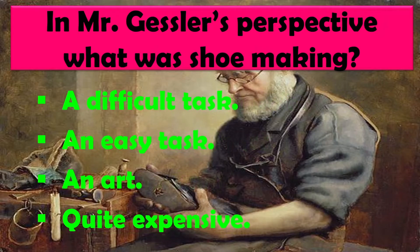In Mr. Gessler's perspective, what was shoemaking? Mr. Gessler ke nazariye se joote banana kya tha? Options: A difficult task — ek kathin kaam, an easy task — ek aasaan kaam, an art — ek kala, quite expensive — bahut mehenga. The right answer is an art. Unke liye joote banana ek kala thi.